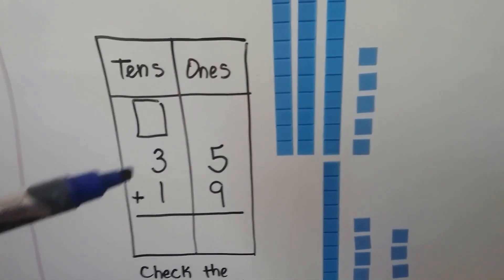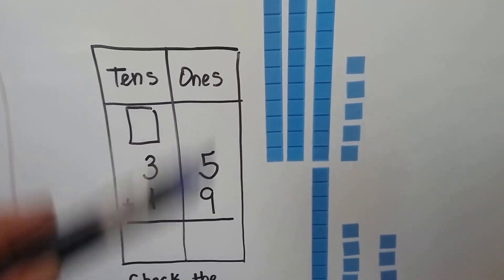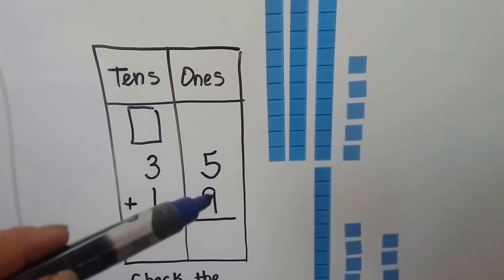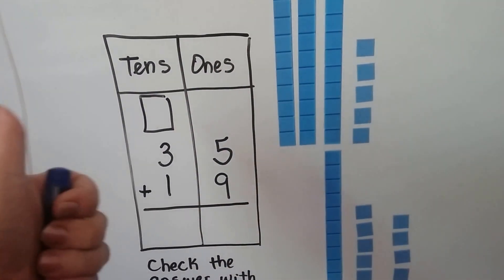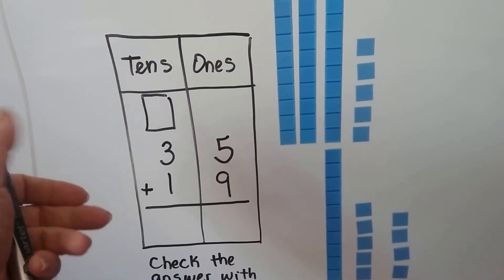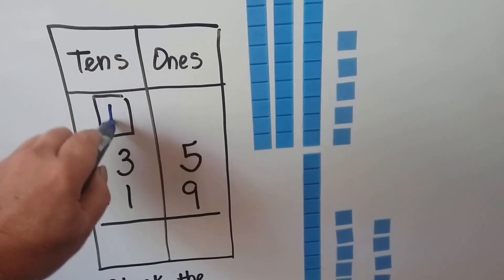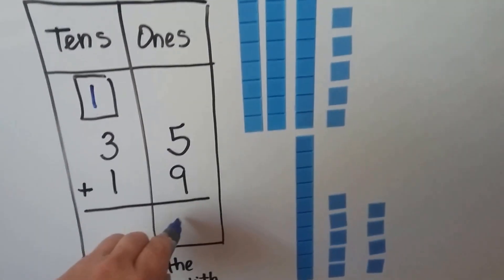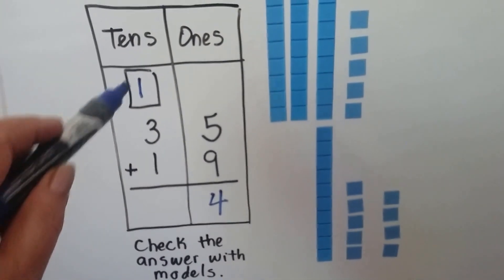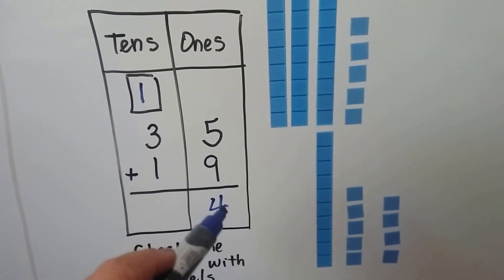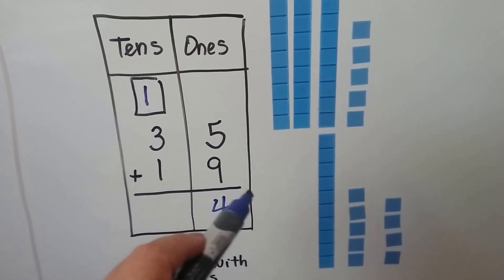Let's try one more time. We've got 35 plus 19. We start in the ones place. We start with the larger number 9 and count on the 5: 9, 10, 11, 12, 13, 14. A 14 is 1 ten and 4 ones. We put the 10 in the tens place and the 4 ones in the sum of the ones place below the line.